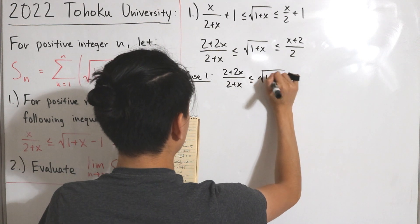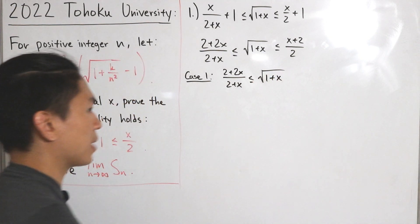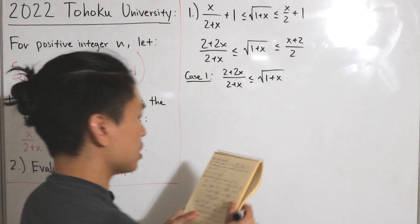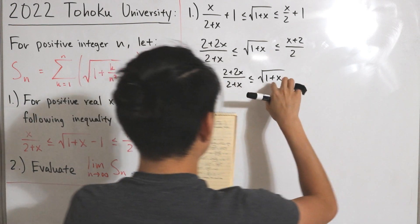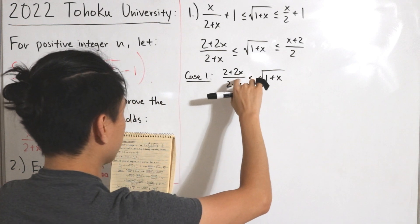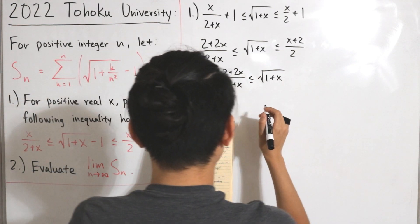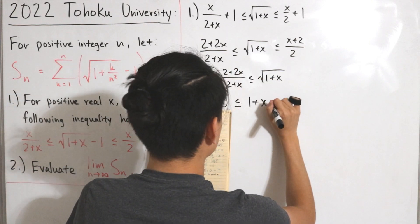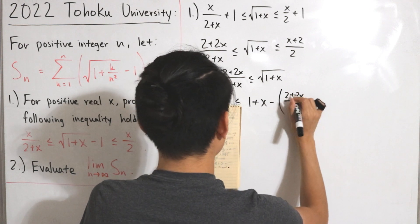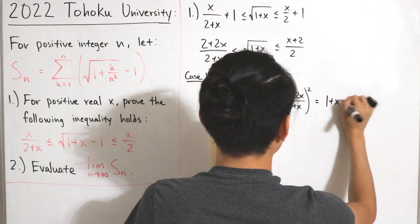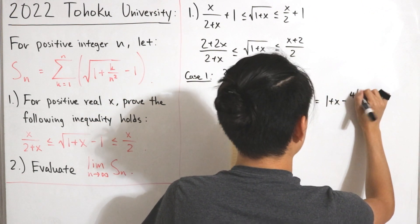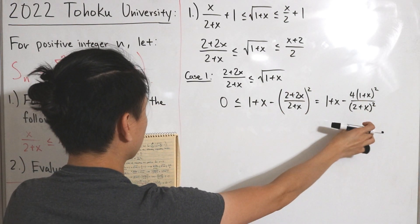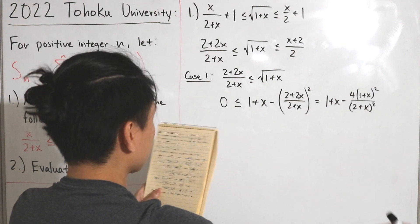For Case 1, we show (2 + 2x)/(2 + x) ≤ √(1+x). Since x > 0, both sides are positive, so we can square both sides. After squaring and rearranging — subtracting the left from the right — we get: 0 ≤ (1 + x) − 4(1+x)²/(2+x)². This simplifies further with common denominator work.